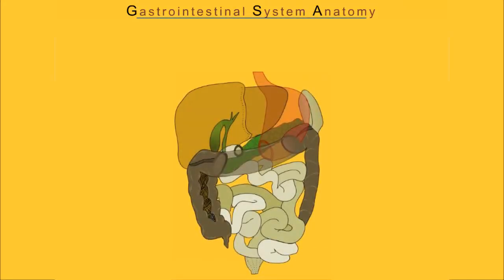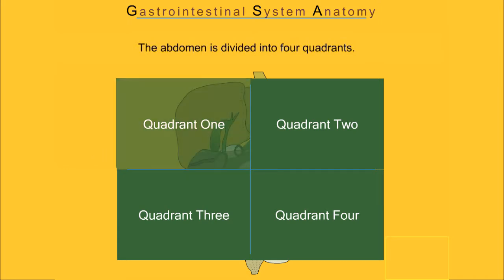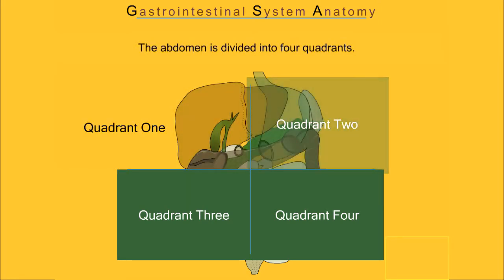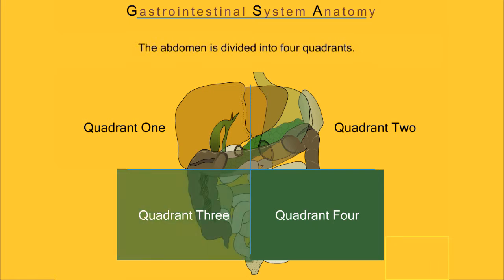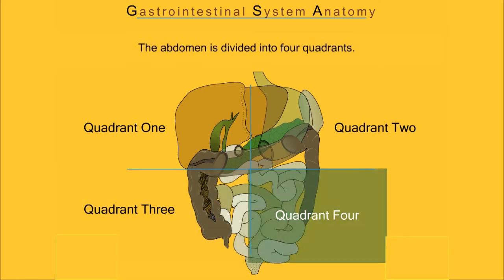Gastrointestinal system anatomy. In this learning activity, you will review the parts of the gastrointestinal system. The abdomen is divided into four quadrants: quadrant one, quadrant two, quadrant three, and quadrant four.